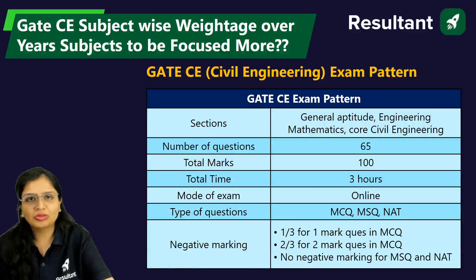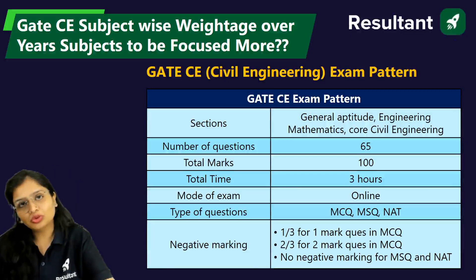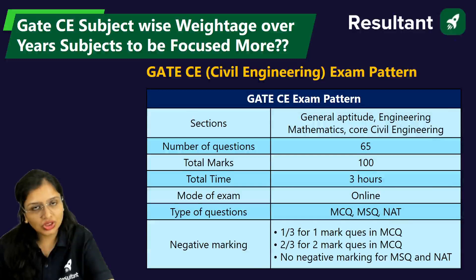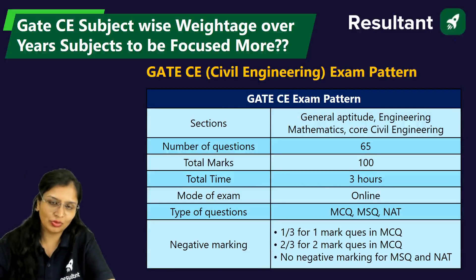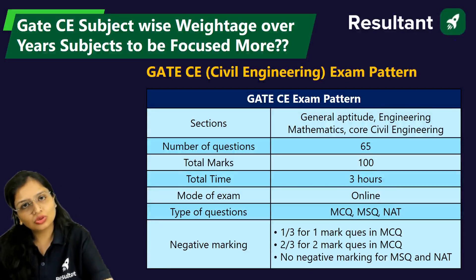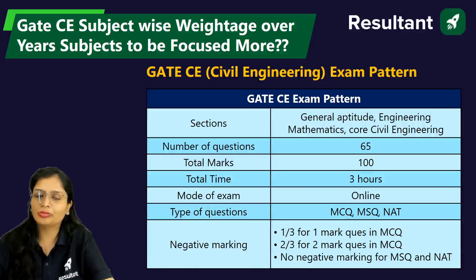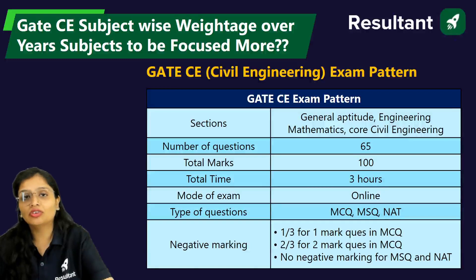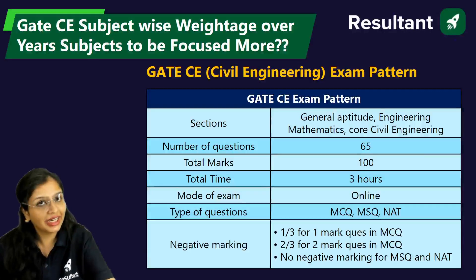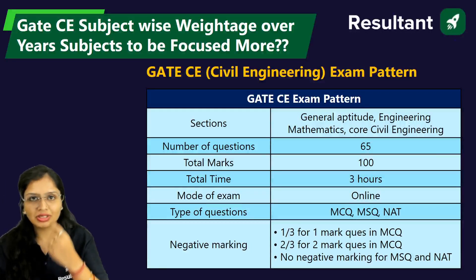The mode of examination will be online, so there will be no OMR sheet. The types of questions will be Multiple Choice Questions (MCQ), Multiple Select Questions (MSQ), and Numerical Answer Type (NAT). For MCQ, if it is a one-mark question and you get it wrong, you get 1/3 negative marking. If it is a two-mark question and you get it wrong, you get 2/3 negative marking. However, there is no negative marking for MSQ and NAT.